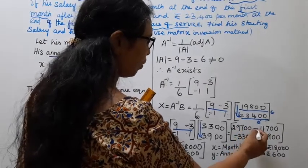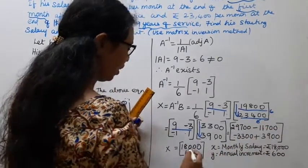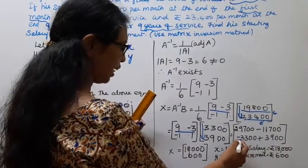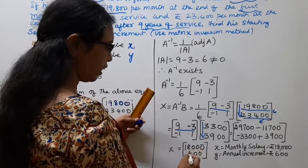29,700 minus 11,700 equals 18,000. 3,900 minus 3,300 equals minus 600. X equals 18,000, Y equals 600.